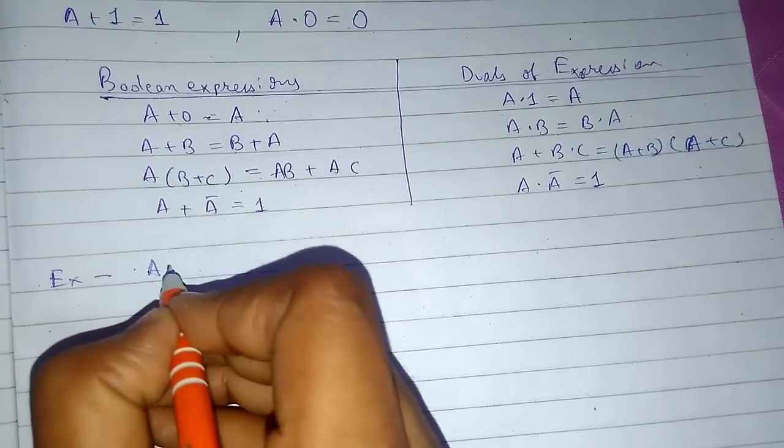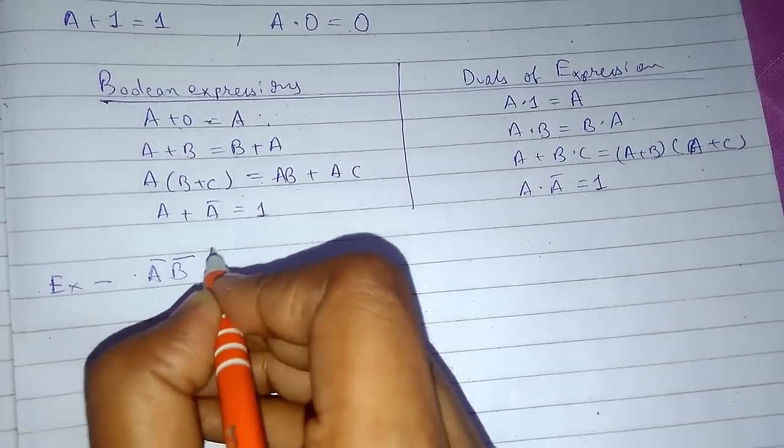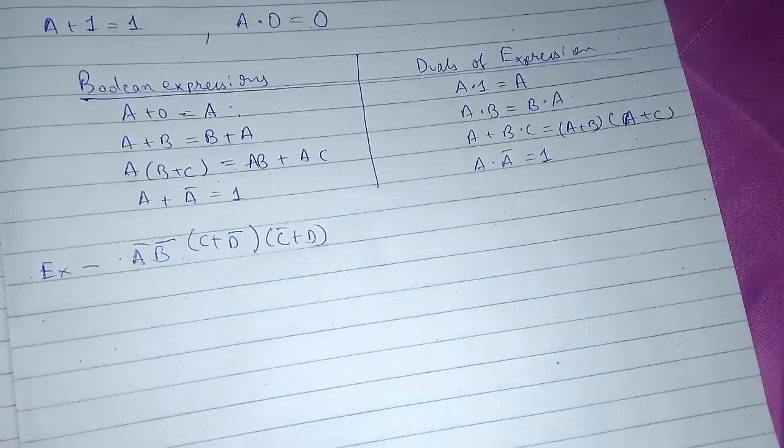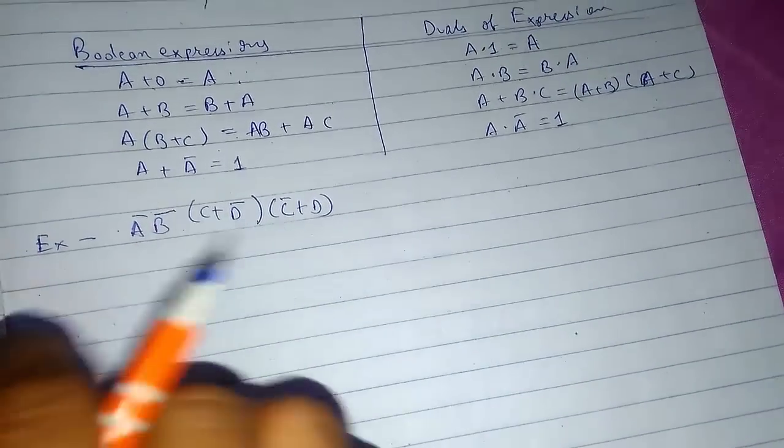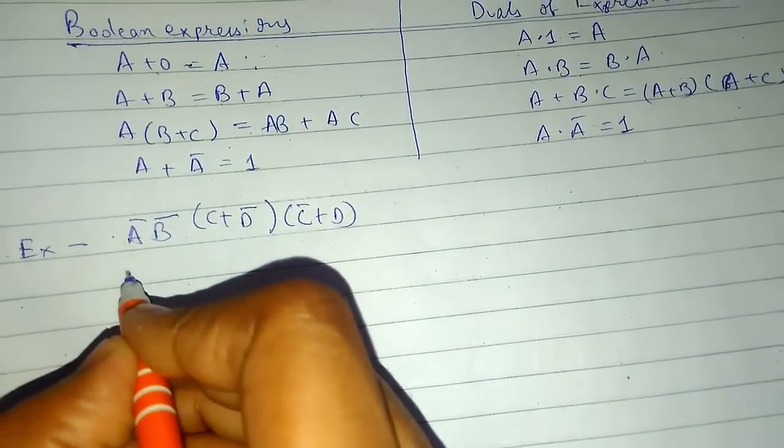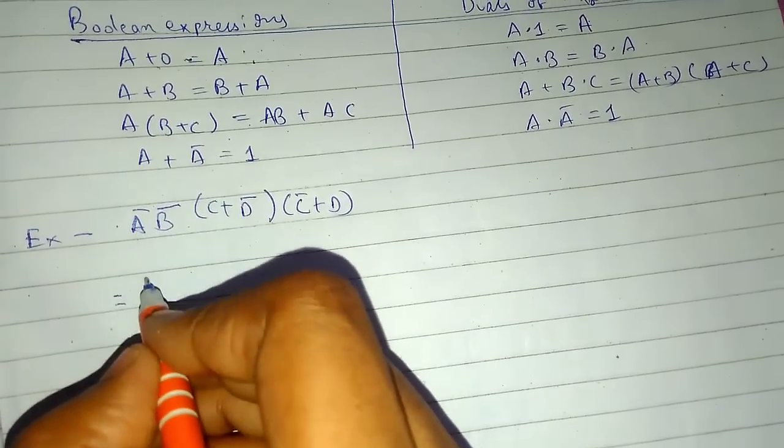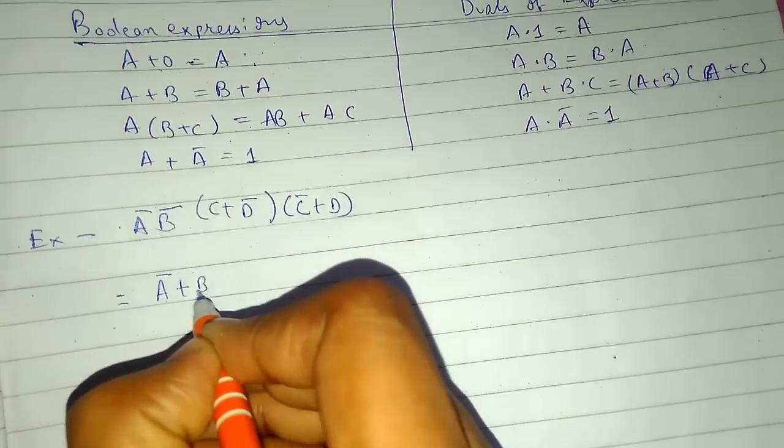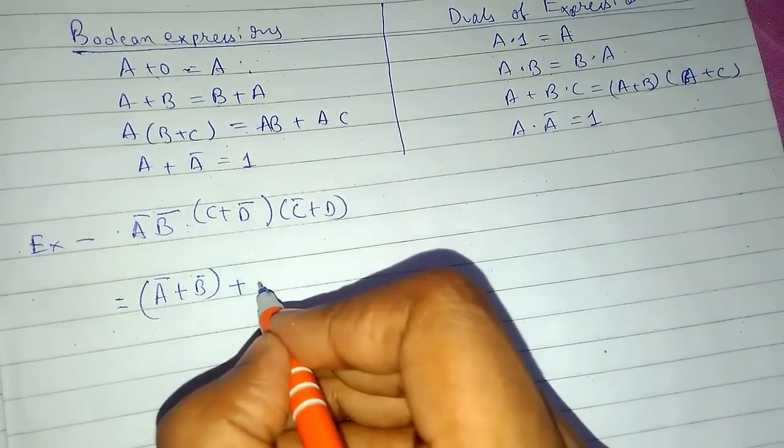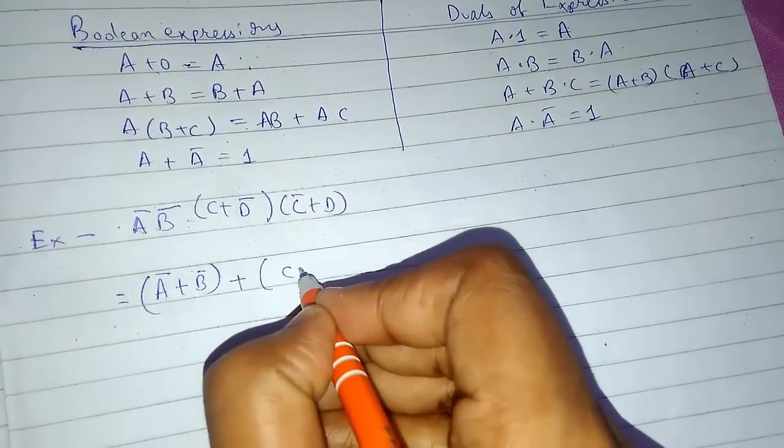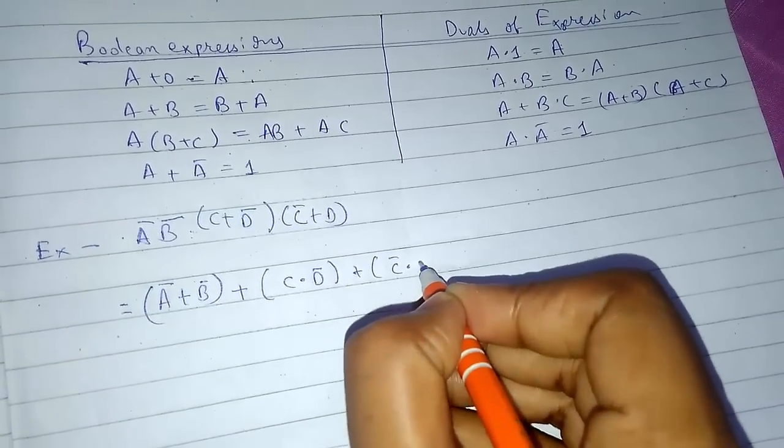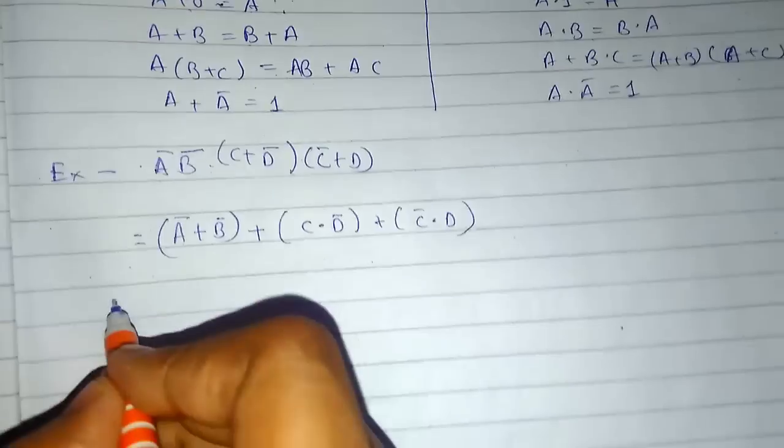We need to find the dual of a bar b bar c plus d bar c bar plus d. The duality will be determined by replacing AND with OR, one with zero, and zero with one. Here there are no zero and one, so we simply convert this. For this two part bracket, this will be again plus. Here it is a dot sign, so it changes to plus. This plus changes to dot, and again this dot changes to plus, and c bar dot d. So this was the Boolean dual expression.